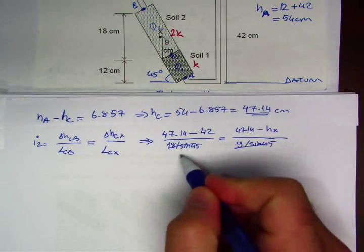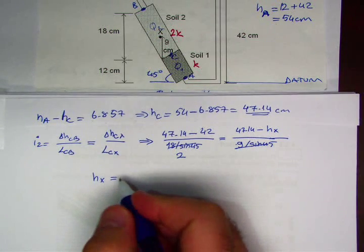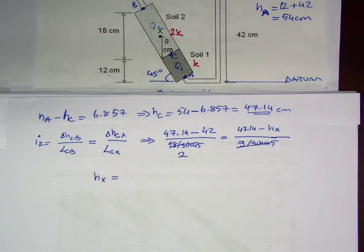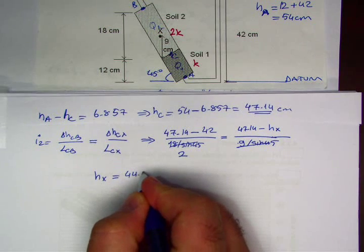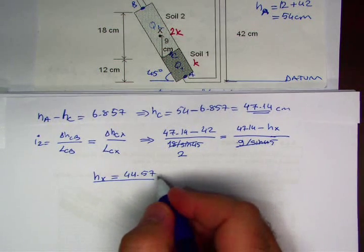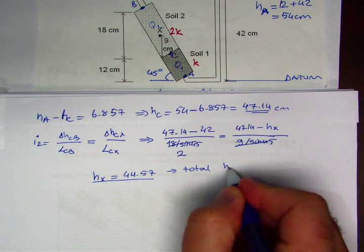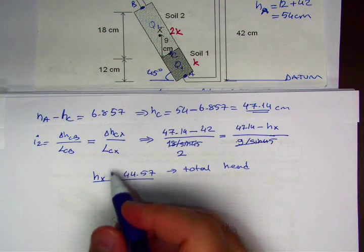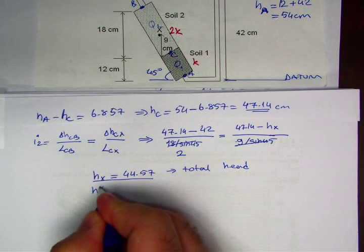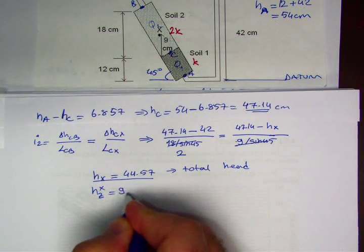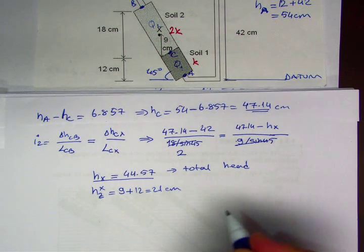As a result, HX comes out to be 44.57. So this is the total head at point X, total head. Now elevation head, ZX, is 9 plus 12, that is 21 centimeters.